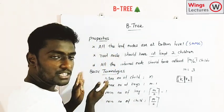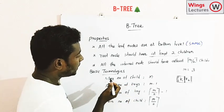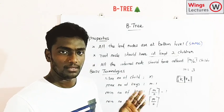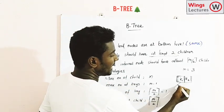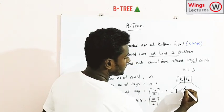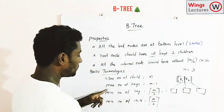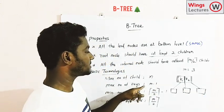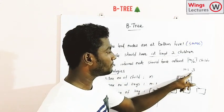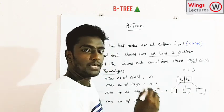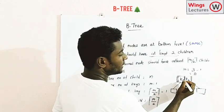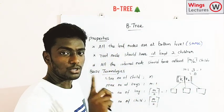The maximum number of children is m, which is the order. For example, if the order m equals 3, a node can have maximum 3 children. The maximum number of keys is m minus 1, so for order 3, a node can have at most 2 keys inside it. This is the main difference from other trees — a node can have more than one element, based on the order of the B-tree.